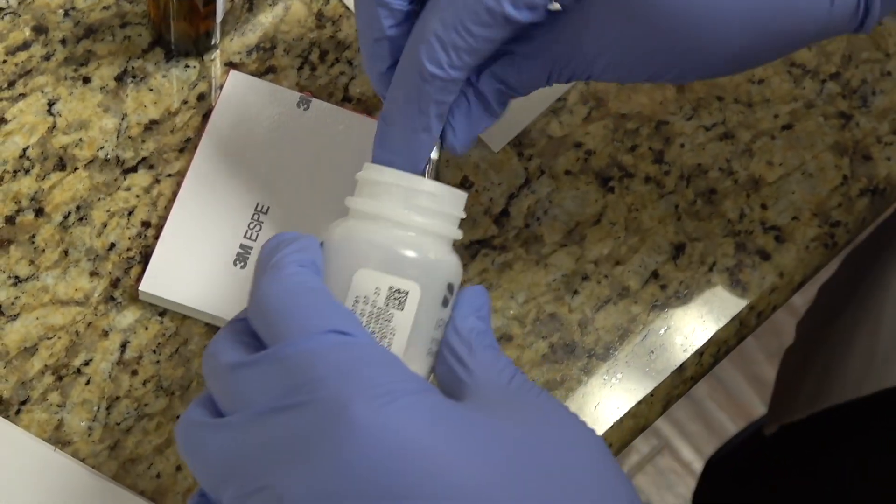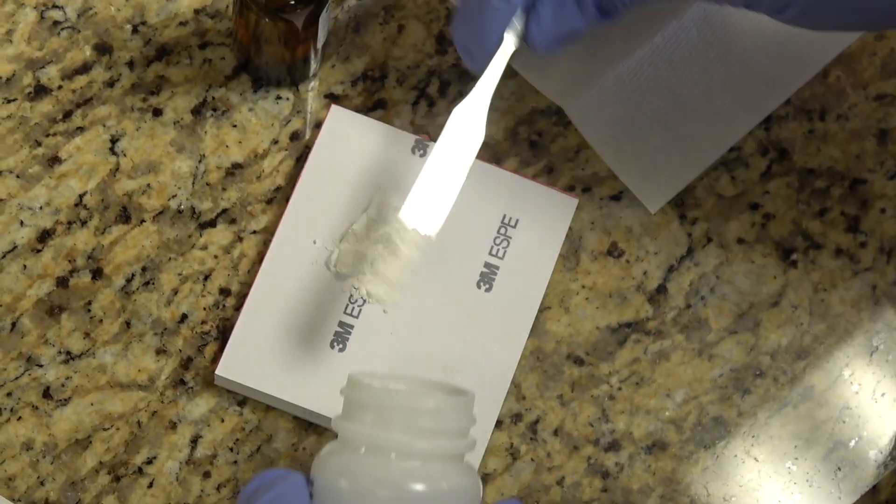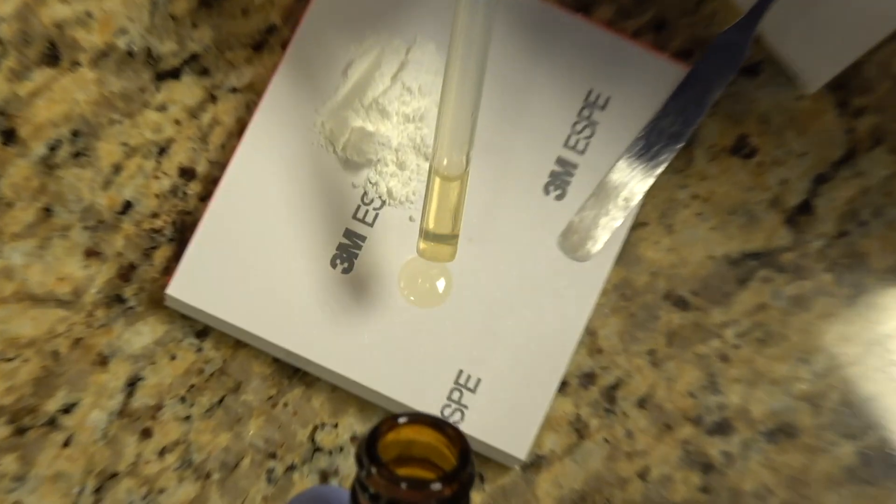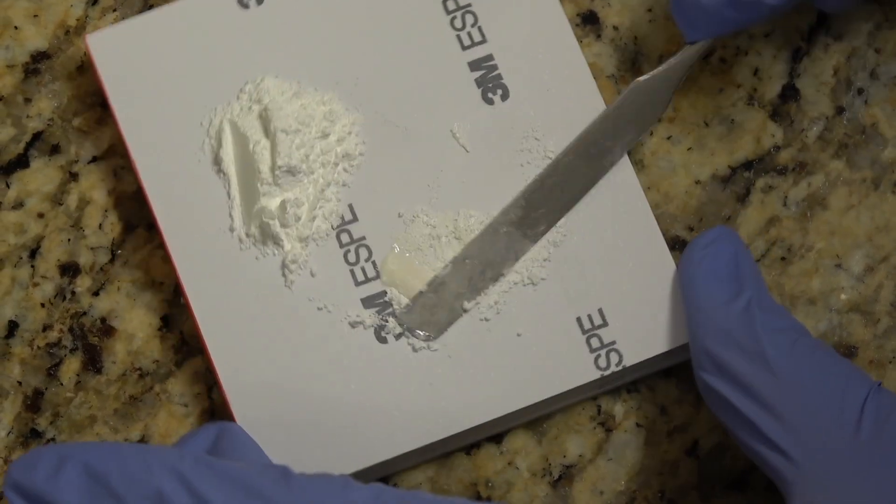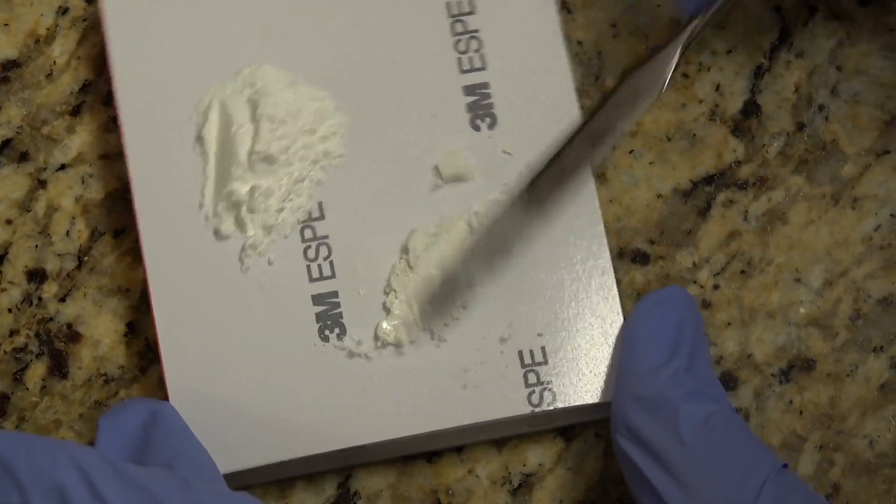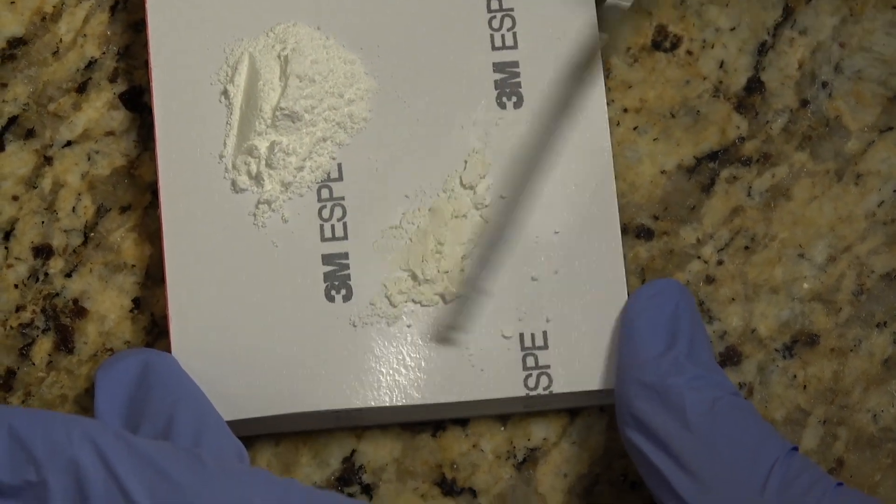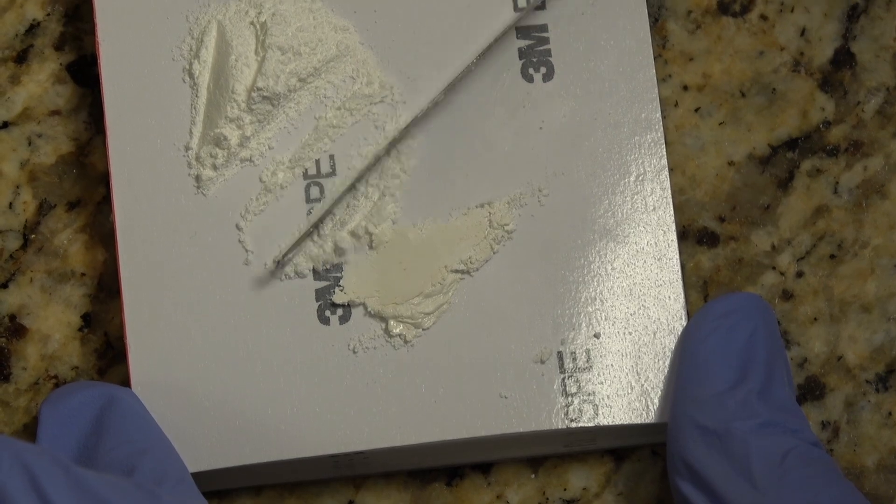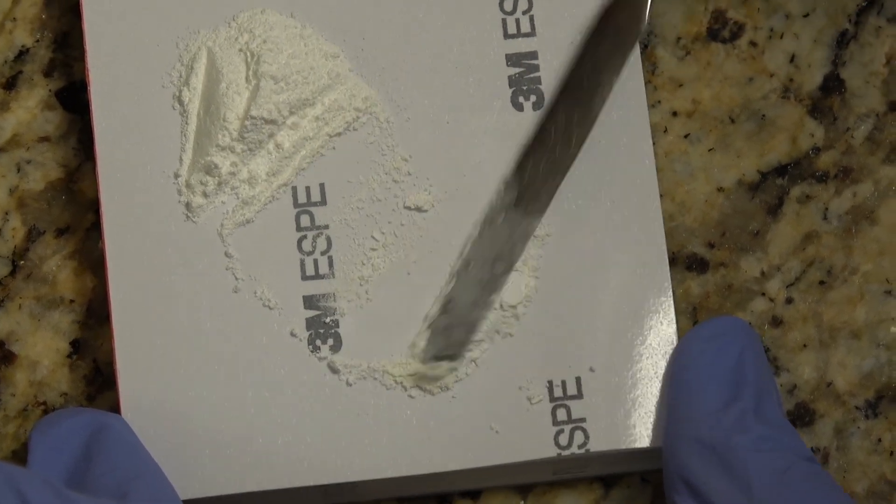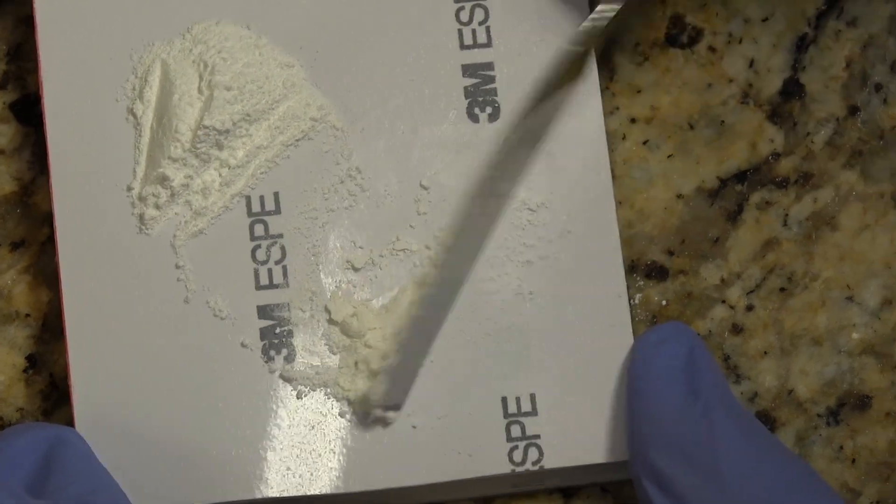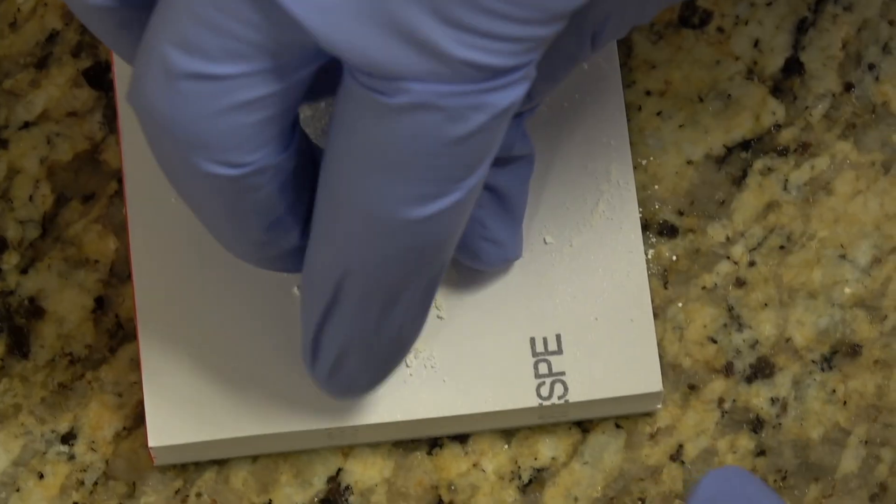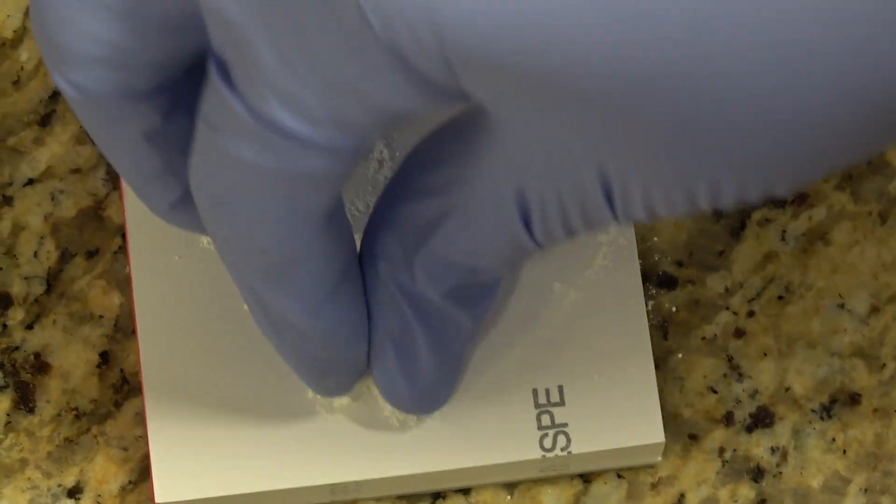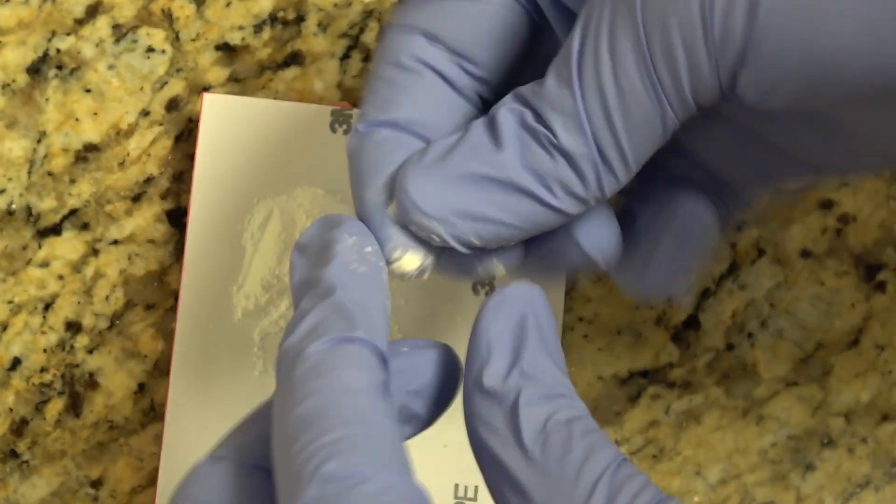Now this is IRM and you mix it dry. First you spatulate it. And then you take your fingers, your glove fingers, and you squeeze the part you've spatulated into the powder so it's pretty dry and pretty firm.